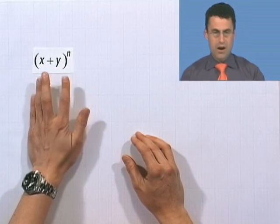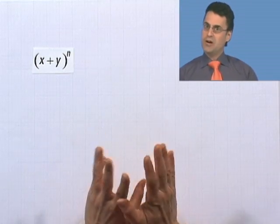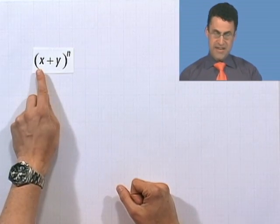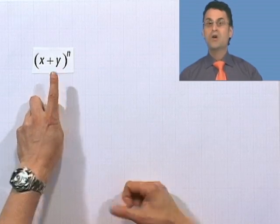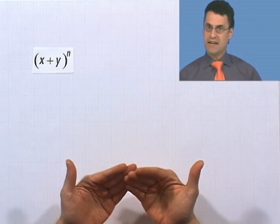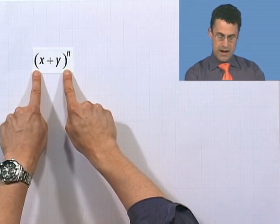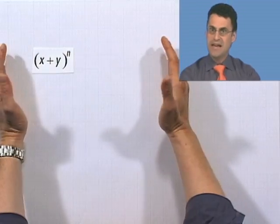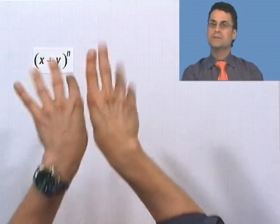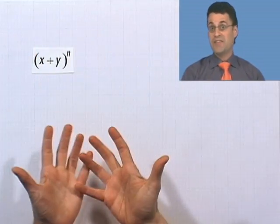We've been having some fun looking at how to expand interesting algebraic expressions like x plus y all to the n. Even though it's a great guess to say this equals x to the n plus y to the n, we see that's really wrong — that's a classic mistake. What we have to do is imagine taking x plus y and multiplying it by itself n times, doing all that foiling to get the answer. The question is, is there a more systematic way of doing it?